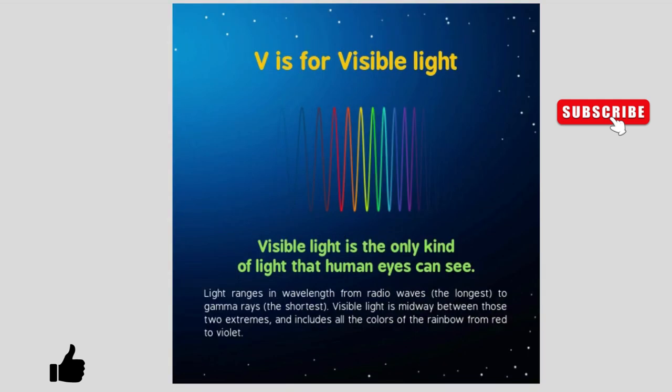V is for Visible Light. Visible light is the only kind of light that human eyes can see. Light ranges in wavelengths from radio waves — the longest — to gamma rays — the shortest. Visible light is midway between those two extremes and includes all the colors of the rainbow from red to violet.